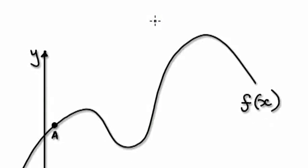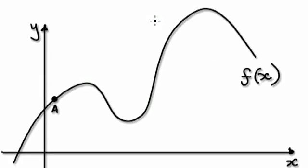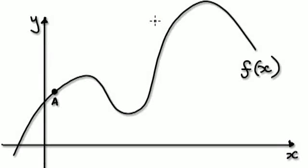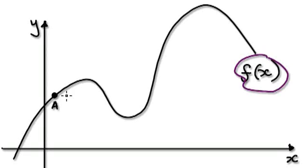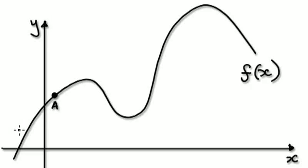A small part of calculus is finding out the gradient of a function. So let's say you've got a function here, f of x. Suppose you want to find out the gradient at this point. To find out the gradient at point a, what you do is you draw what's called a tangent line that just touches a.